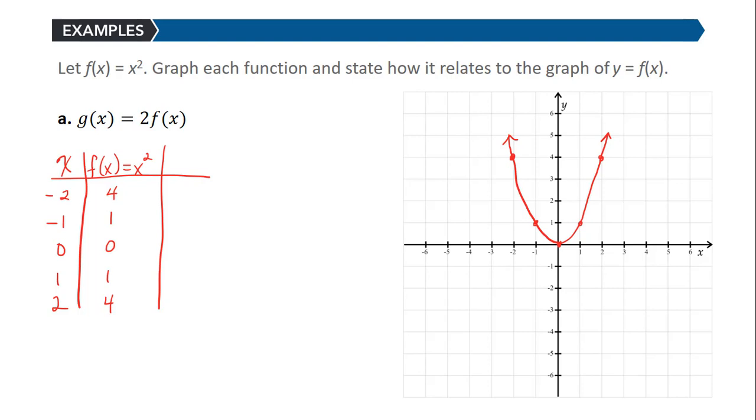So we have this function g(x), which is 2 times f(x). So 2 times f(x) tells us that g(x) is really just 2x squared. So for every input, this is just telling us that the output value is doubled. It's multiplied by 2. We're taking 2 times those original function values.